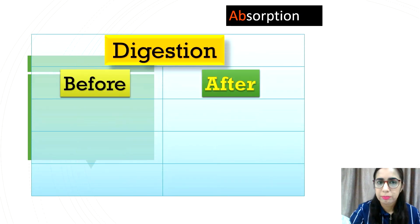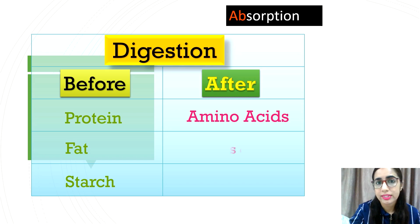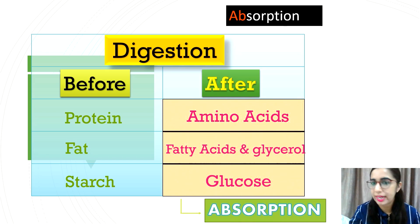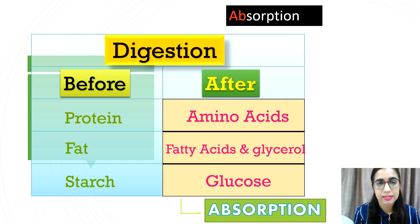From the previous lesson, the products of digestion of protein, fats, and starch are broken down into amino acids, fatty acids and glycerol, and simple sugars — glucose, fructose, and galactose respectively. So what will happen to these soluble nutrients, and how are they made available to all body cells?